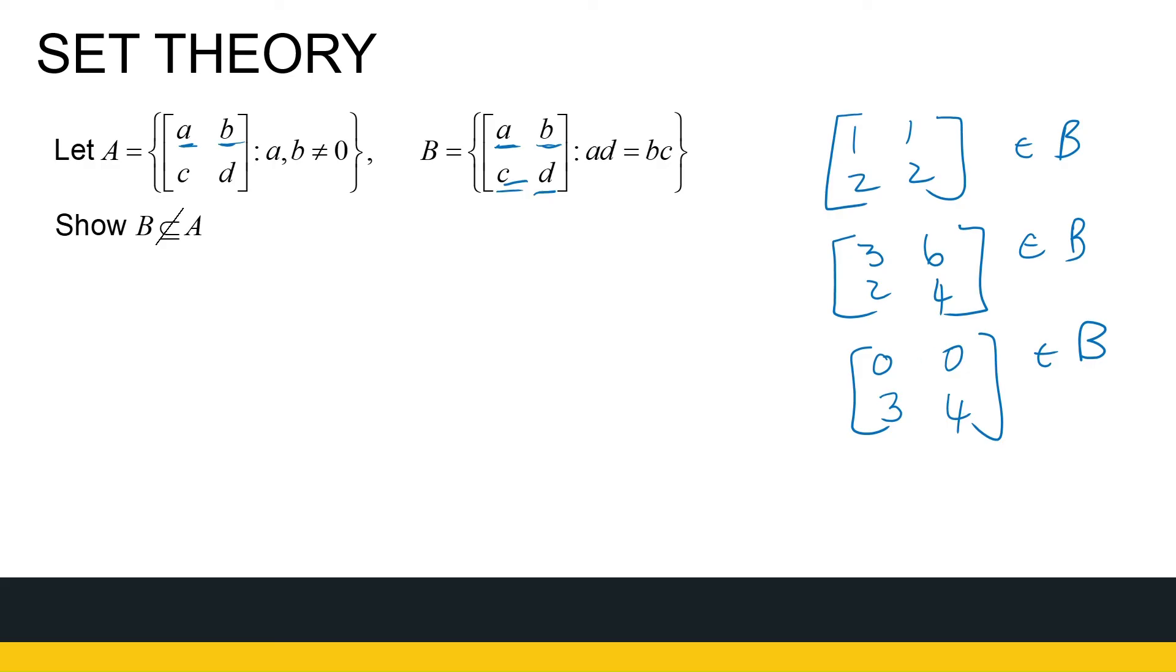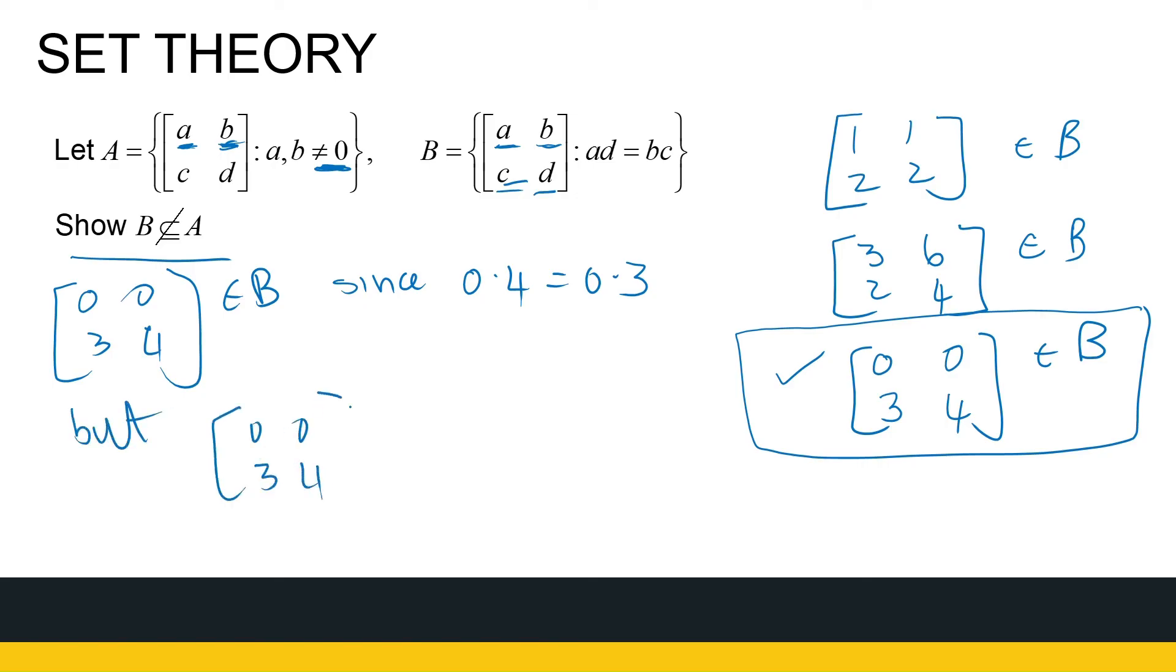All right. Let's go back to my set A, or my question. I want to show that B is not a subset of A. So, I need an element of B that's not in A. Now, A tells me these two can't be 0. Now, strategically, I've already got one example that serves as my counter-example. If not, you'd have to think of something. Can I generate an element of B for which those two are 0, or one of them, at least, is 0. So, I've got 0, 0, 3, 4 as an element of B. And, if you want to explain it, since 0 times 4 is equal to 0 times 3. But, 0, 0, 3, 4 is not an element of A, because both those entries are 0. So, therefore, I can conclude that B is not a subset of A.